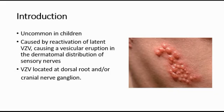Shingles is caused by the reactivation of latent varicella zoster virus (VZV), causing a vesicular eruption in the dermatomal distribution of the sensory nerves. This VZV is located at the dorsal root and/or at the cranial nerve ganglions.